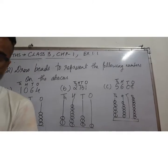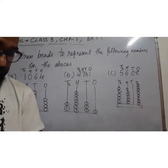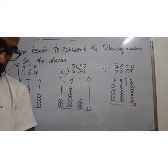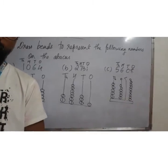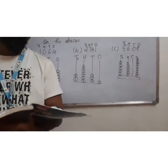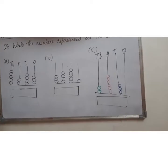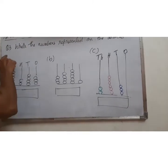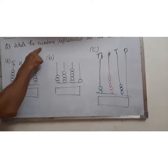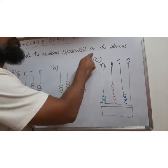Now, if I see question number 2, I have done A, B, C. D, E, F you all can practice. Okay? After this, we are going to start with question number 3. Now guys, this would be question number 3 where we need to write the numbers represented on abacus.